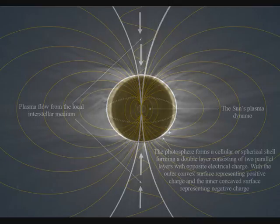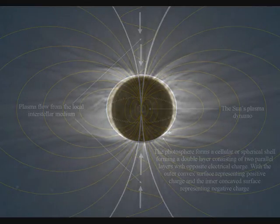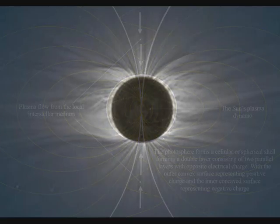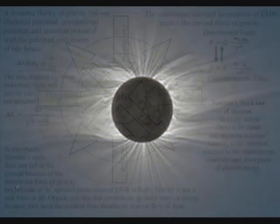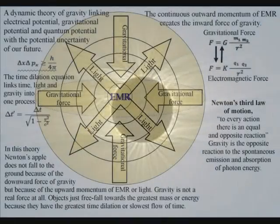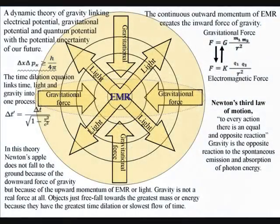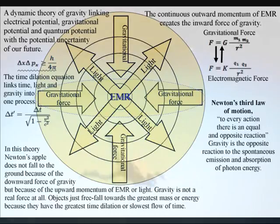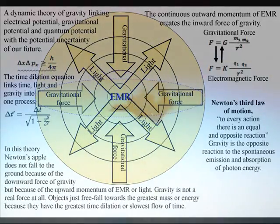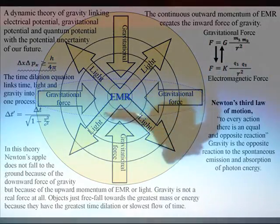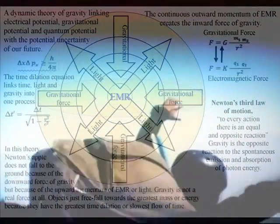This can be seen during a solar eclipse when magnetic field lines can be seen in the sun's outer corona restraining the outward flow of plasma. In this theory, there is no need for a balance between the outward pressure and the inward force of gravity, because gravity is a secondary force to the electromagnetic force.